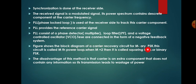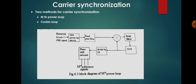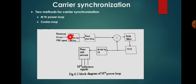The PLL consists of a phase detector (multiplier), a loop filter (low pass filter), and a voltage controlled oscillator connected in a negative feedback system. The figure shows the block diagram of the carrier frequency circuit for M-ary PSK. This circuit is called the Mth power loop. When M equals 2, this is called a squaring loop for binary PSK.